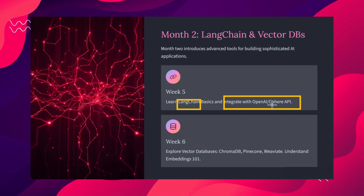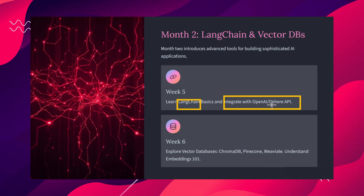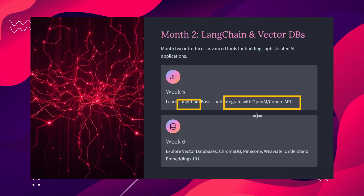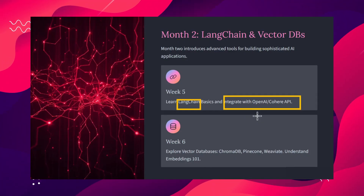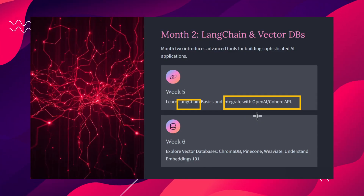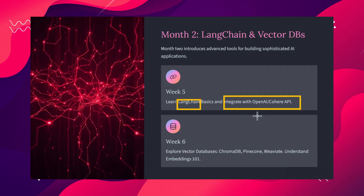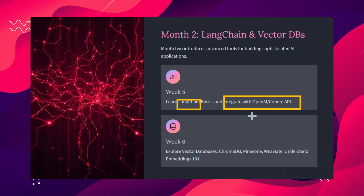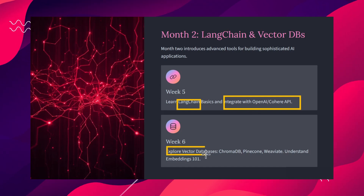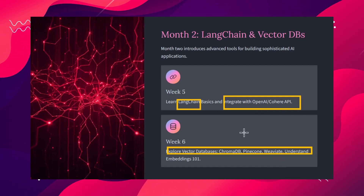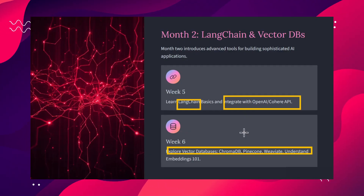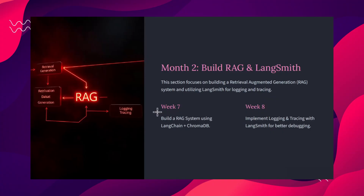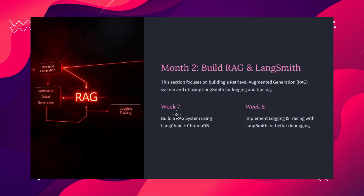Week six covers vector databases. We need to understand what a vector database is, the differences between ChromaDB, Pinecone, Weaviate, and FAISS. We also need to understand embeddings, what embedding models are available, how to perform embeddings, and how to search data from vector databases. You should be able to convert any document into vector data, store it in a vector database, and retrieve it.